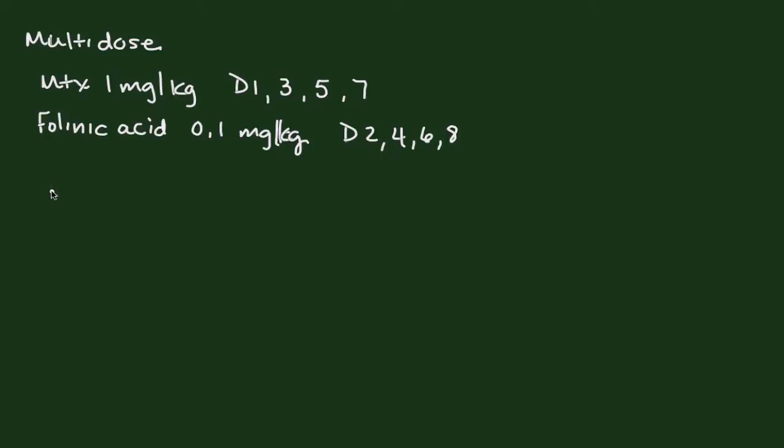What you want to do, though, is you want to get beta-HCGs on methotrexate days. And then when your betas drop by greater than or equal to 15%, then you stop the regimen. So you may find that a patient only needs three doses of methotrexate or two doses of methotrexate or may need all four doses of methotrexate based on this schedule of the multidose regimen.